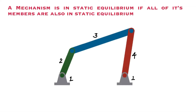A mechanism is in static equilibrium if all of its members are also in static equilibrium. In a four-bar mechanism there are four links, but in force analysis we consider only the three movable links. For example, if an external force F acts on link 3, it tries to move the blue link and rotate the red output link 4 clockwise, and similarly rotates the input green link 2 clockwise, thus disturbing the mechanism from its equilibrium condition.